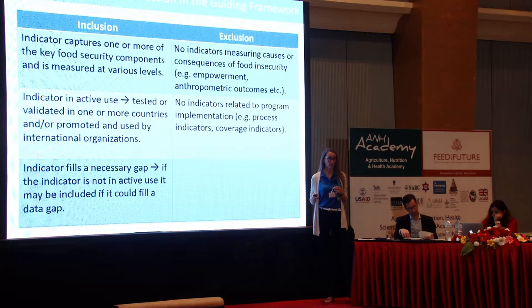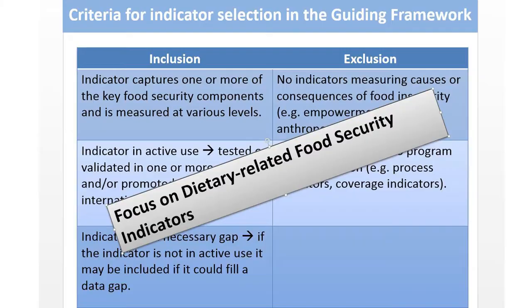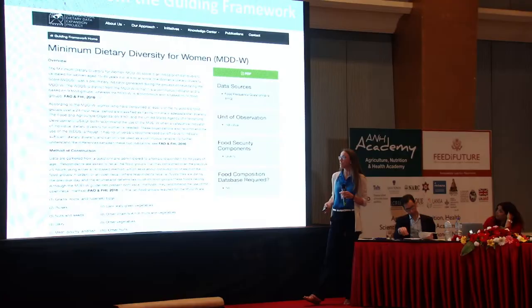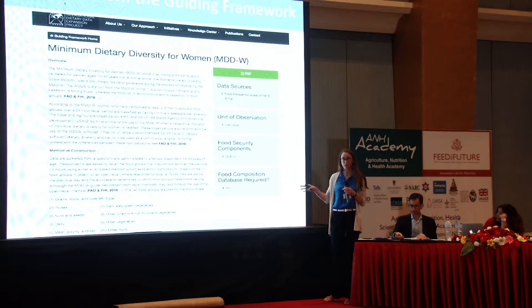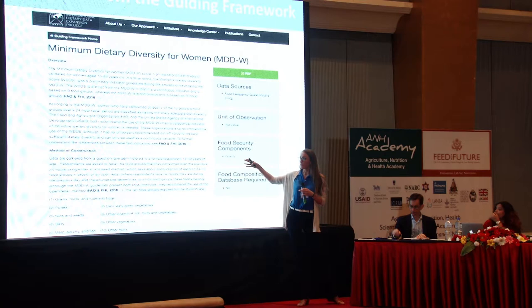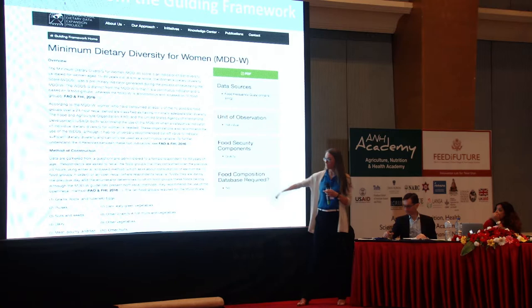To give a sense of how indicators were included or excluded in the guiding framework: the project started from a broad canvassing of all food security indicators, then selected those that captured one or more key food security components measured at one of the levels described — ideally in active use, tested or validated in one or more countries, and promoted by large international organizations. Indicators measuring causes or consequences of food insecurity that were more distally related to the definition were excluded, as were any program implementation-related indicators.